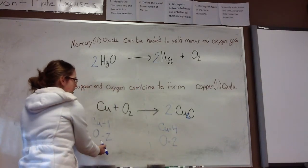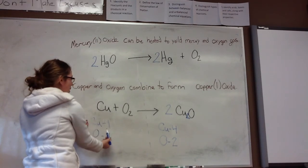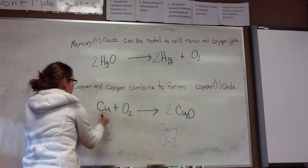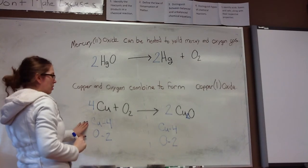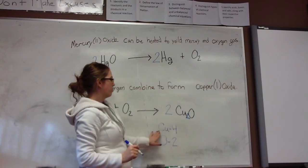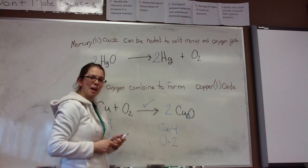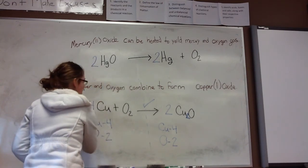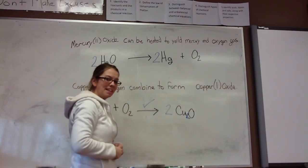But, we're still not balanced. Our oxygen is now balanced, which is good, but our copper is not. We need to write a 4 in front of our copper in order to have 4 copper atoms, 2 oxygen atoms, 4 copper atoms, and 2 oxygen atoms on that side. And that's your balanced chemical equation. I hope that made sense.